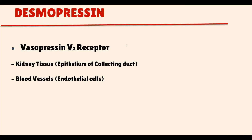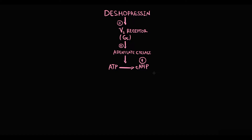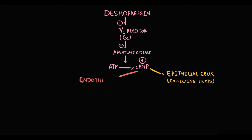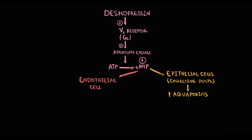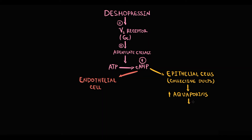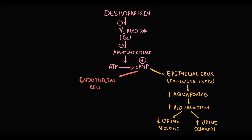In our organism we have two major tissues that have V2 receptors: kidney tissue and blood vessels. V2 receptors are present on epithelial cells in renal collecting ducts, and also on endothelial cells of the blood vessels. In collecting ducts, increasing cyclic AMP induces an increasing amount of aquaporin molecules on the epithelial surface. With increasing aquaporins, the absorption of water increases, thereby decreasing urine volume and simultaneously increasing urine osmolarity.